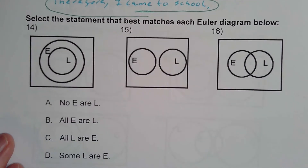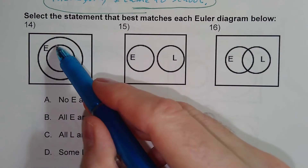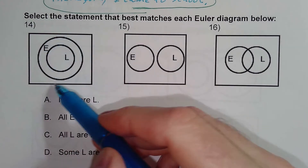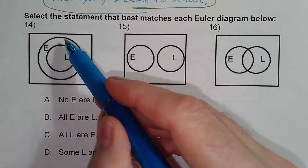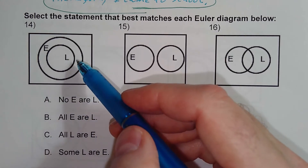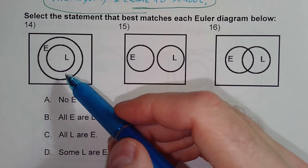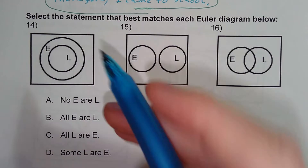Let's try number 14. It says select the statement that best matches each Euler diagram. Looking at number 14, L is inside of E. Whenever the first set is inside the second set, that's either going to be an 'all' statement or an 'if-then.' Either way, the inside circle has to come first.